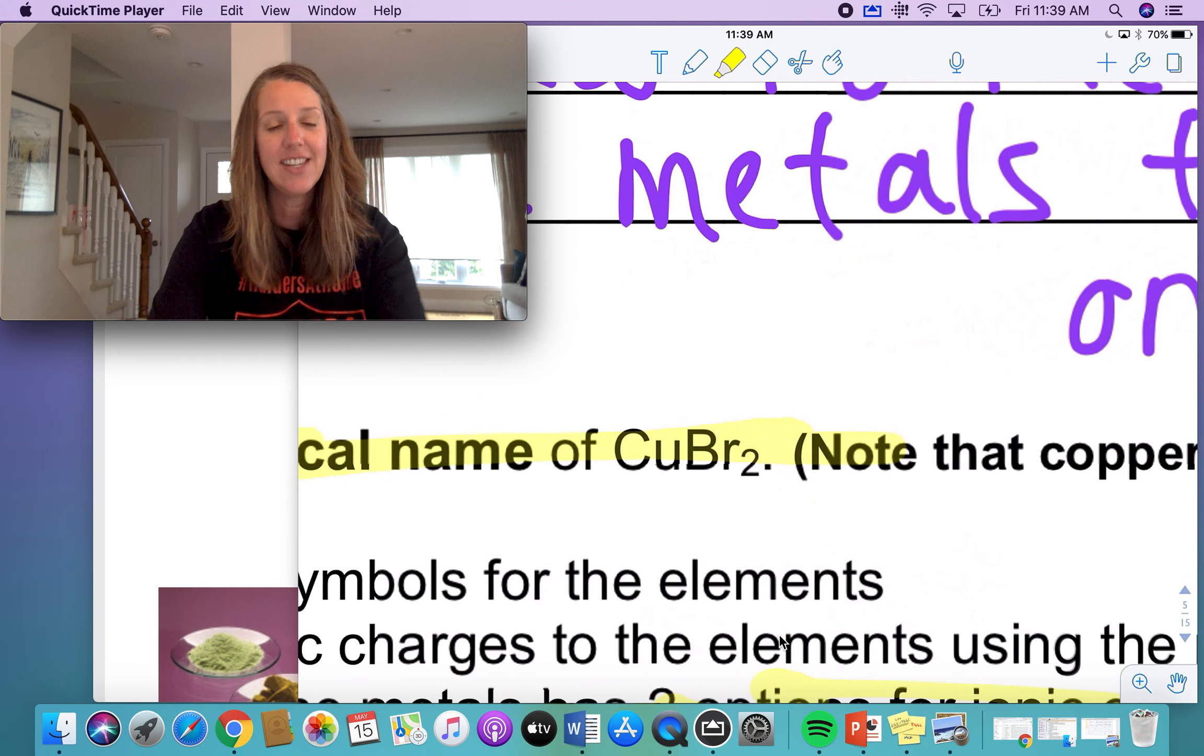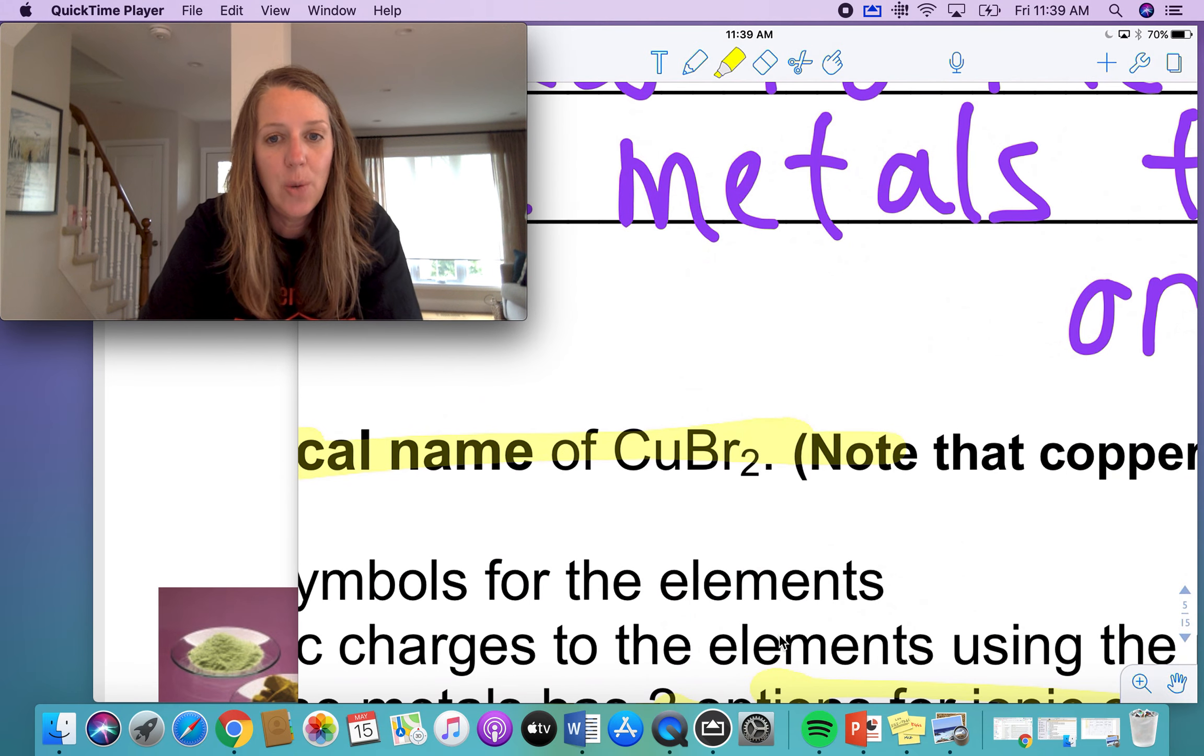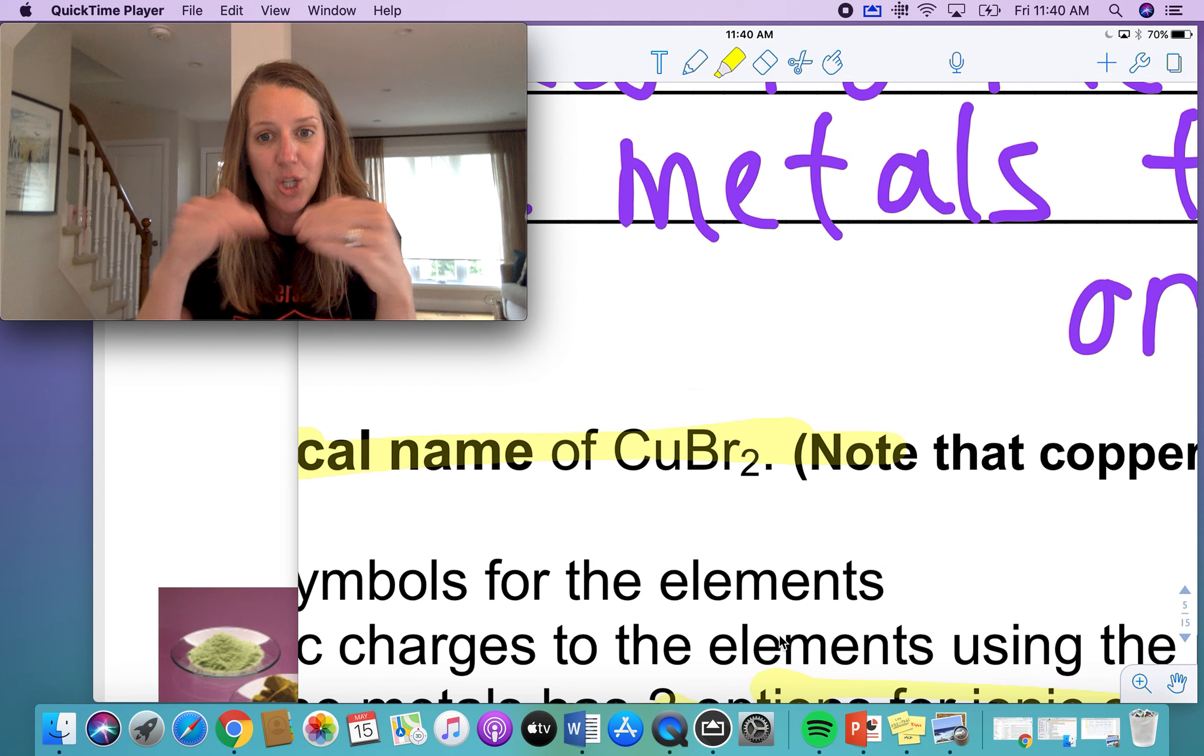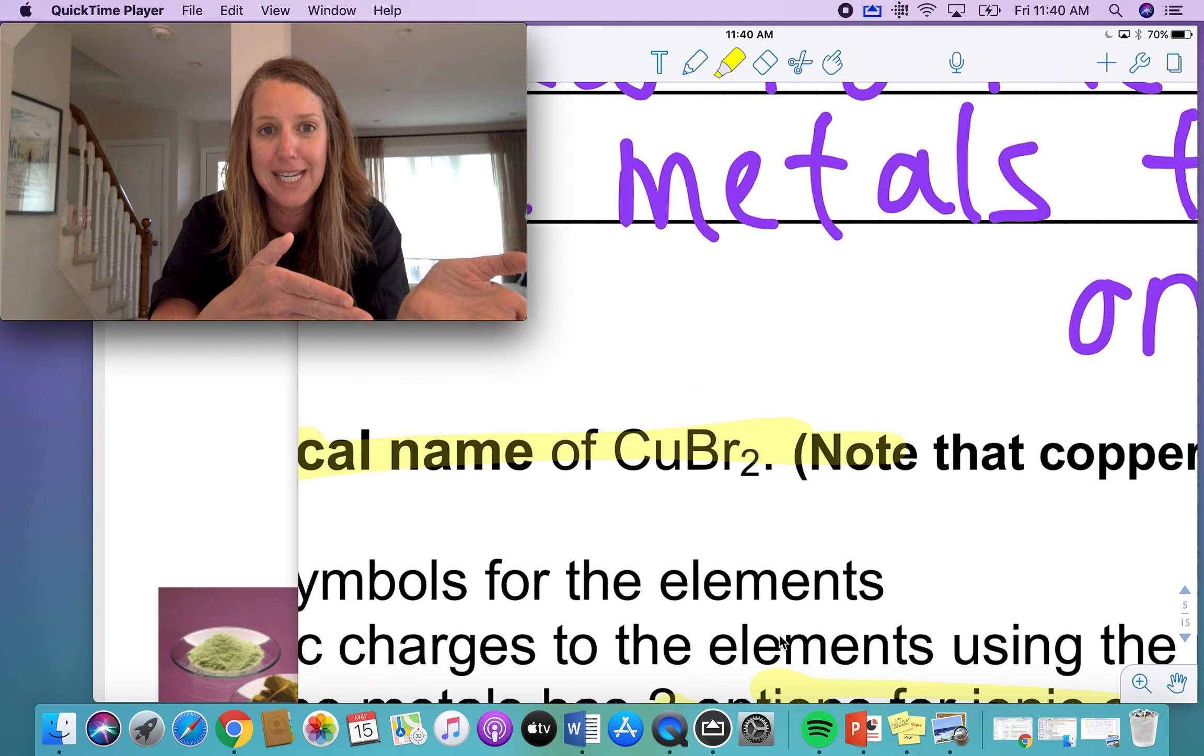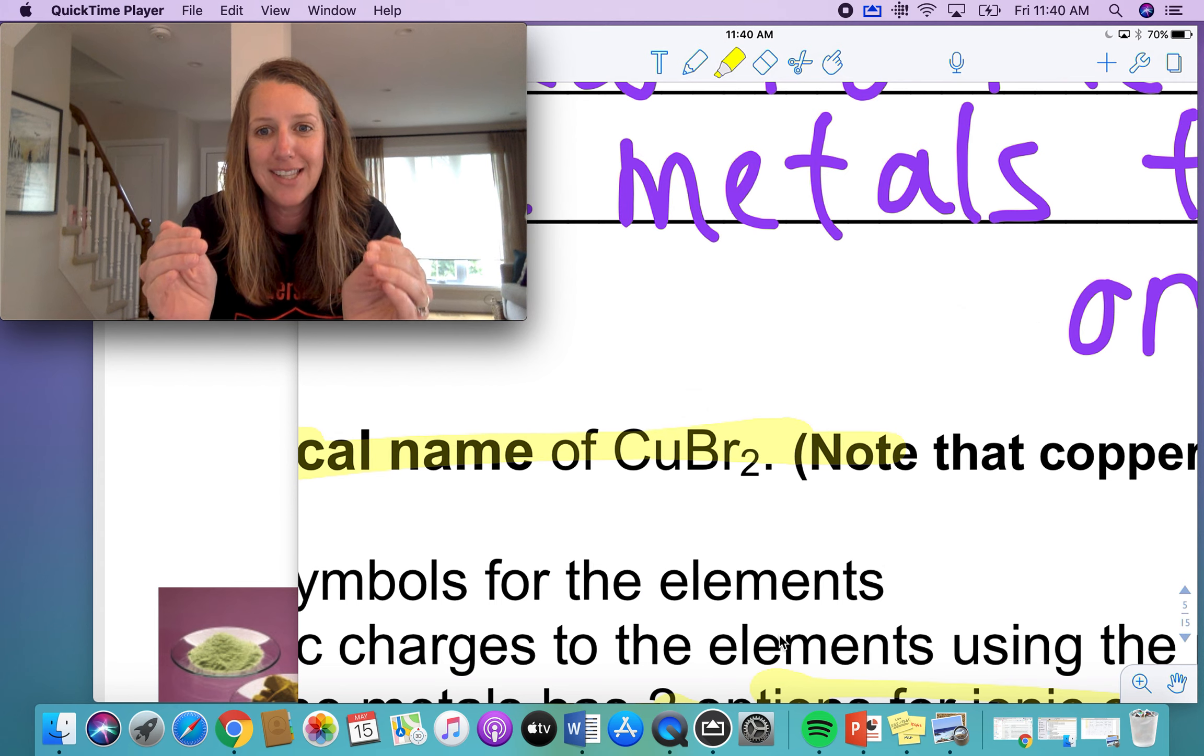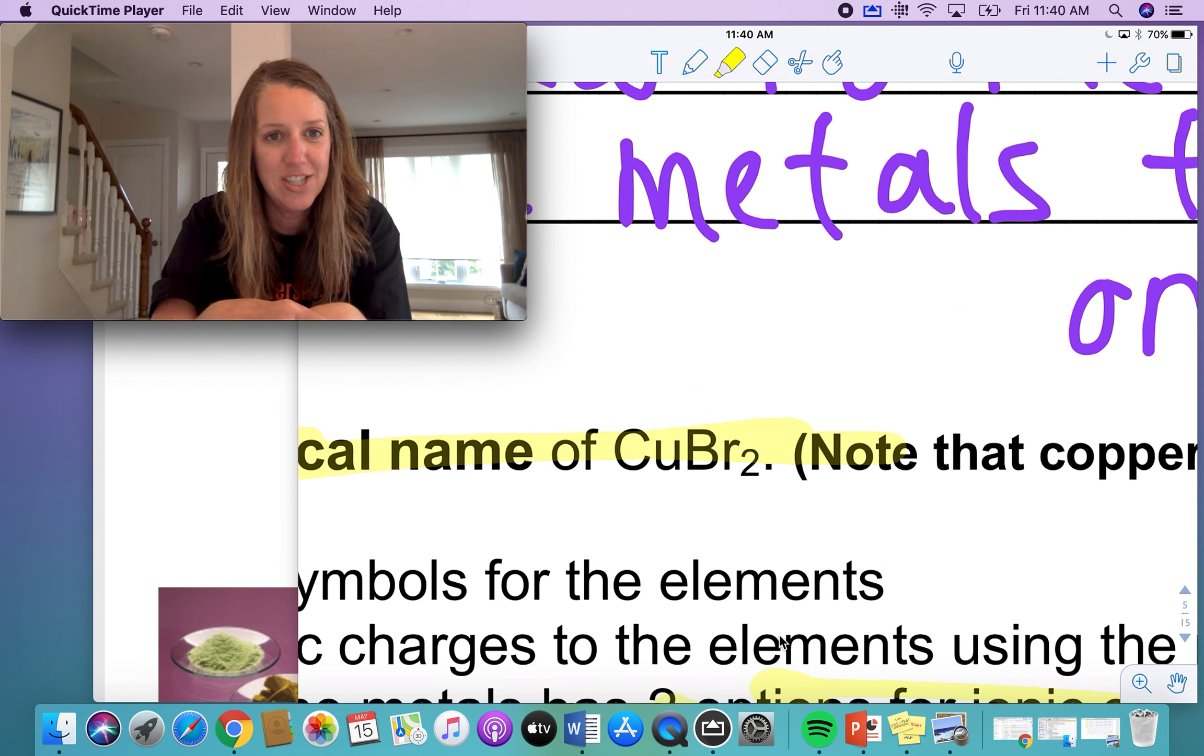Now, can you look at CuBr2 knowing that bromine is an ion that has a one minus charge. Can you do that math in your head? Can you work backwards to figure out what the charge of that copper must be to have a compound that's CuBr2? Take a minute and just see if you can do that math in your head.